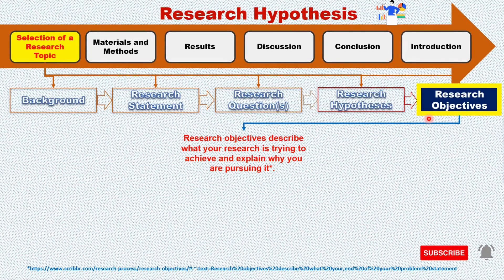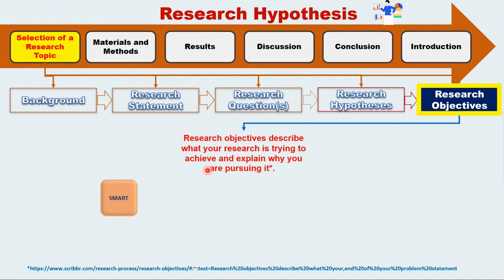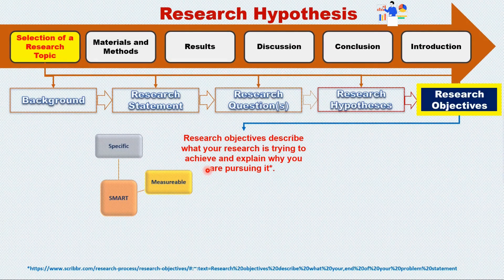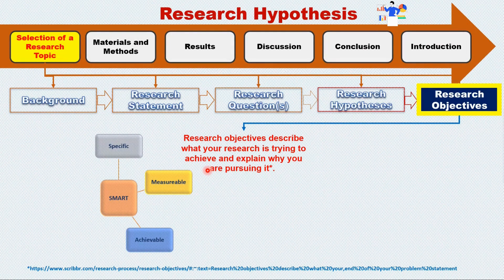In the next step, the researcher should set objectives to test the hypotheses developed. Research objectives should be SMART. For example, the objectives should be specific and clear — not vague. The researcher should know how they will measure whether the objectives have been achieved. Moreover, research objectives may be challenging, but they should be feasible and achievable.